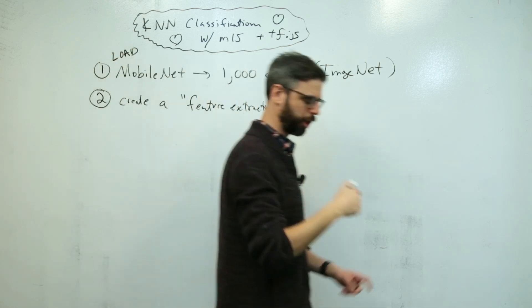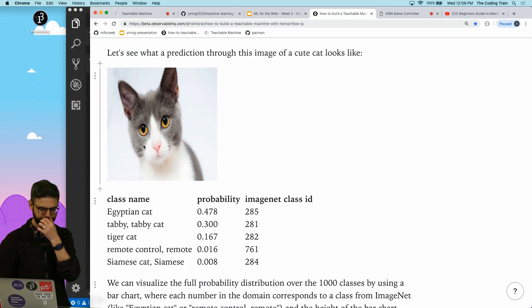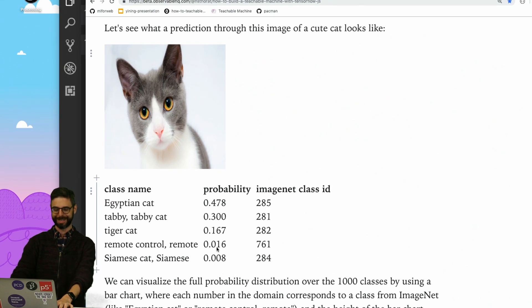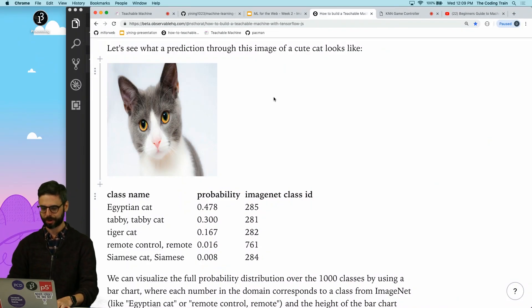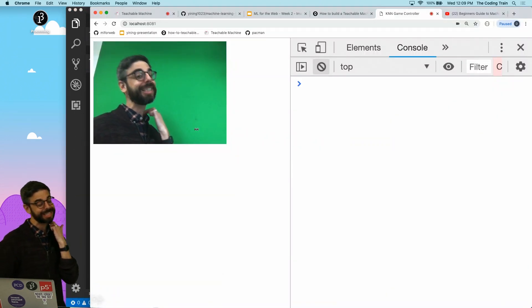The first step is to load this model. It's a good basis from which to do this transfer learning process. So what I have already, which is from my previous examples, is a sketch that loads the image from the webcam and displays it in the window.